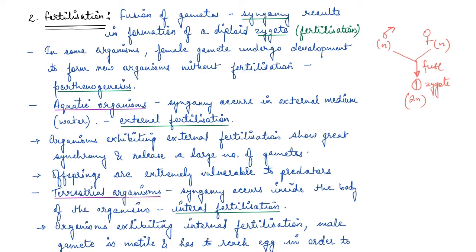Now in terrestrial organisms — like fungi, higher animals such as reptiles, birds, mammals including humans, and even many plants like bryophytes, pteridophytes, gymnosperms, and angiosperms — syngamy occurs inside the body of the organism. Inside the female body the fertilization occurs, and that is why it is known as internal fertilization.